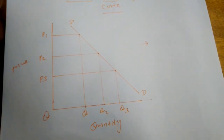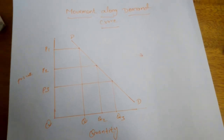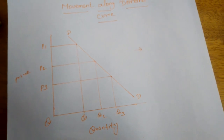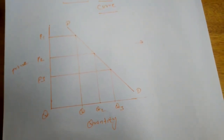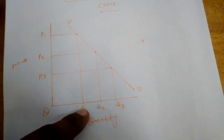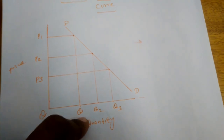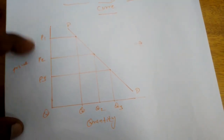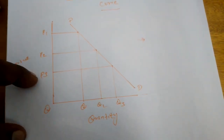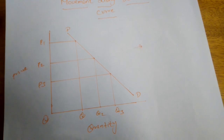This is called the movement along the demand curve. The quantity of the commodity will increase or decrease along the demand curve, but the demand curve itself will not change. For example, when price is at P1, quantity is OQ. If price decreases from P1 to P2, quantity increases from OQ to OQ2. If price decreases further to P3, quantity also increases to Q3, but the demand curve always remains the same.